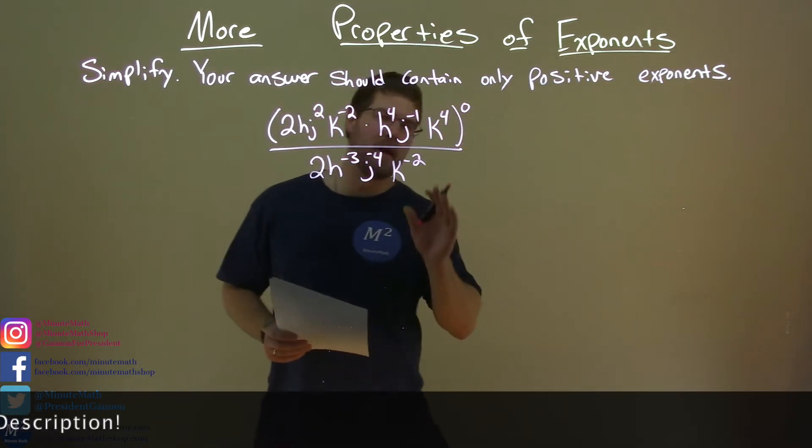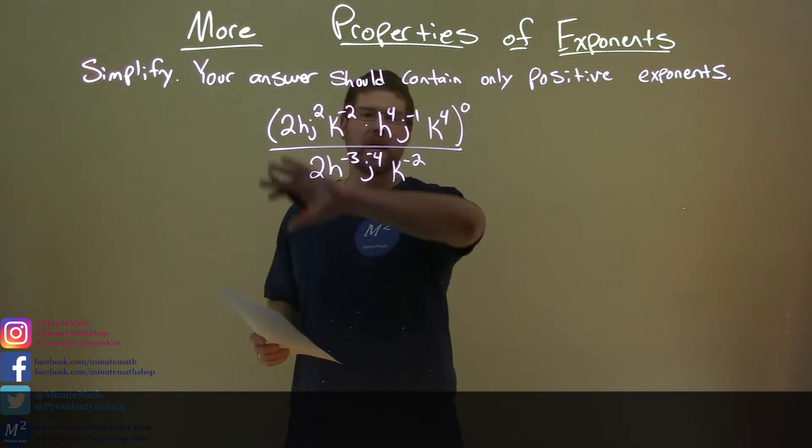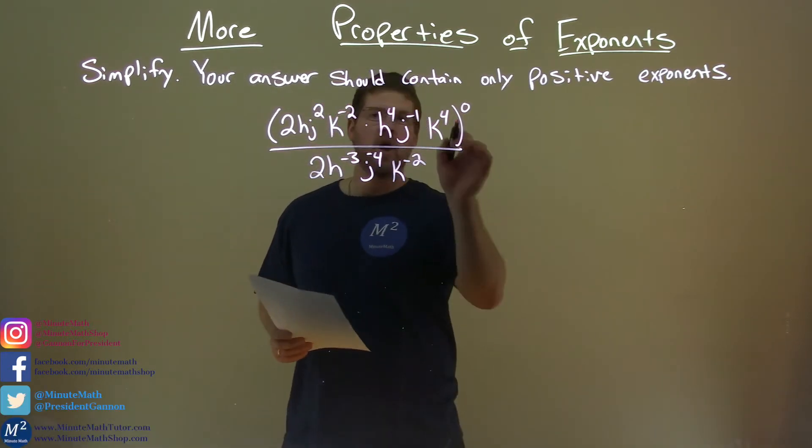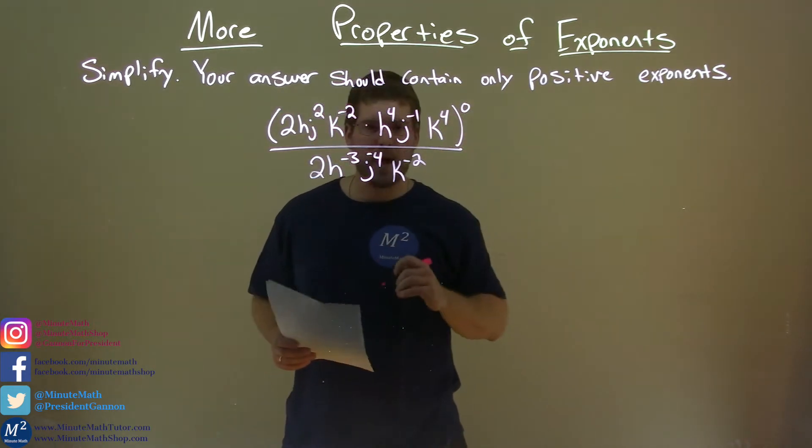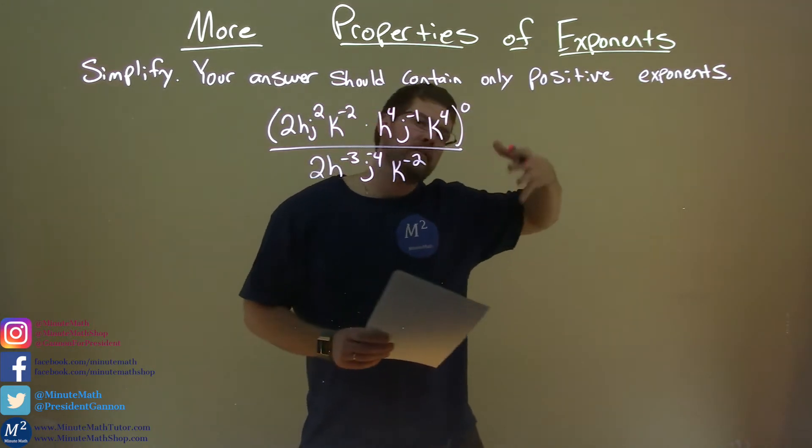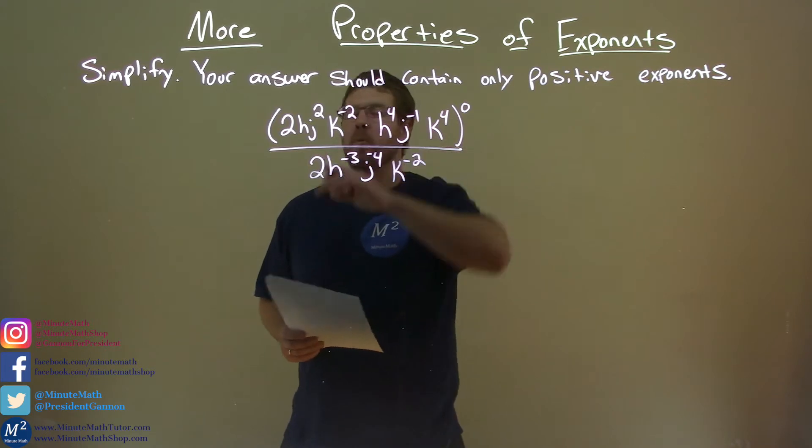Well, one thing here I'm noticing from the beginning, before we start diving in, let's do something simple. All of this, this whole numerator, basically, is raised to the 0 power. What is anything raised to the 0 power but 1?